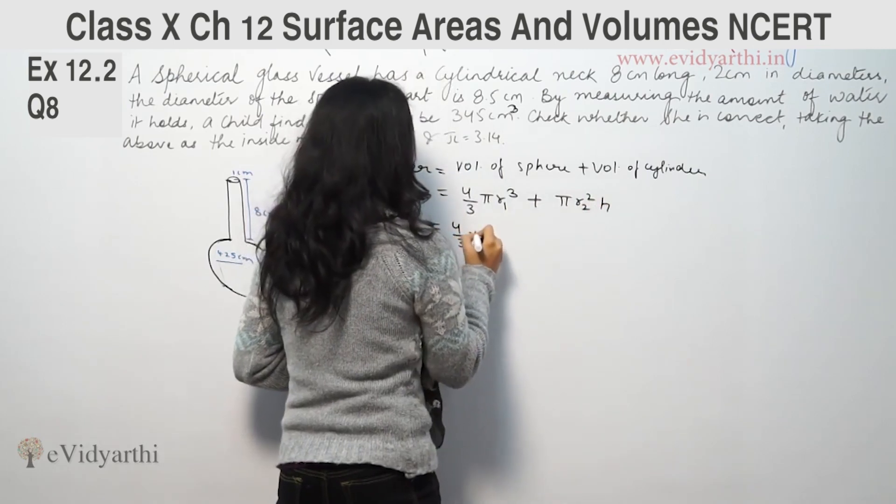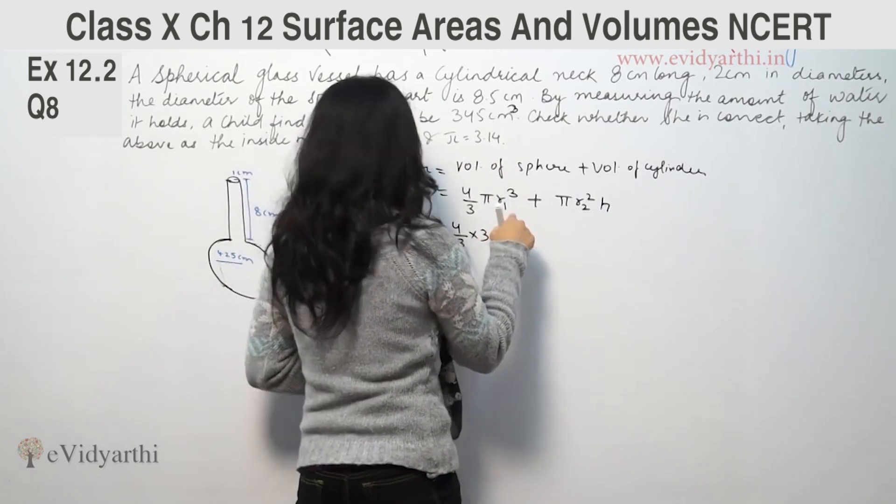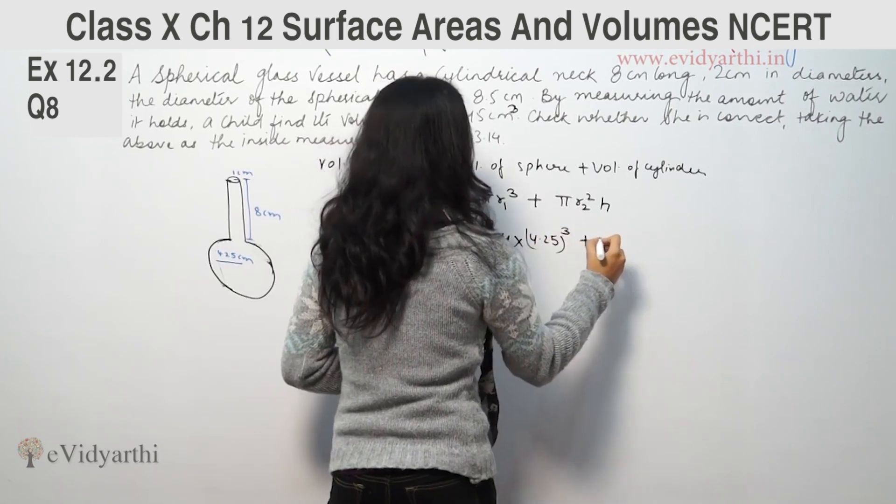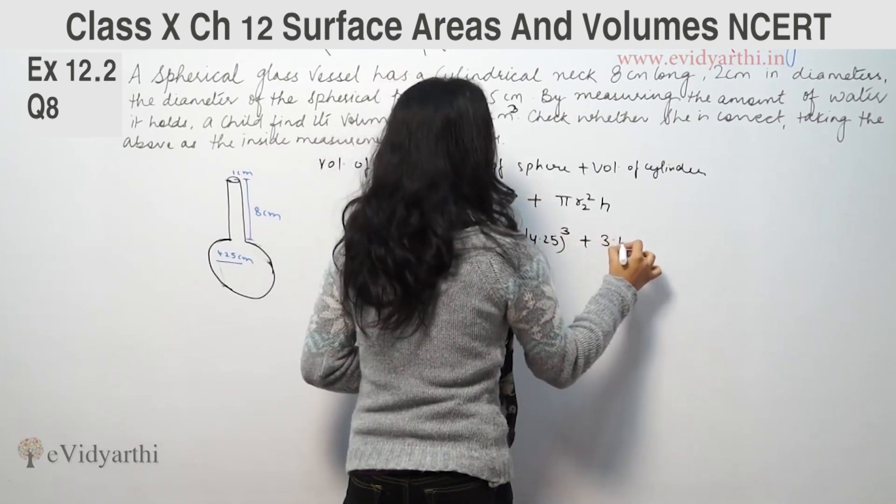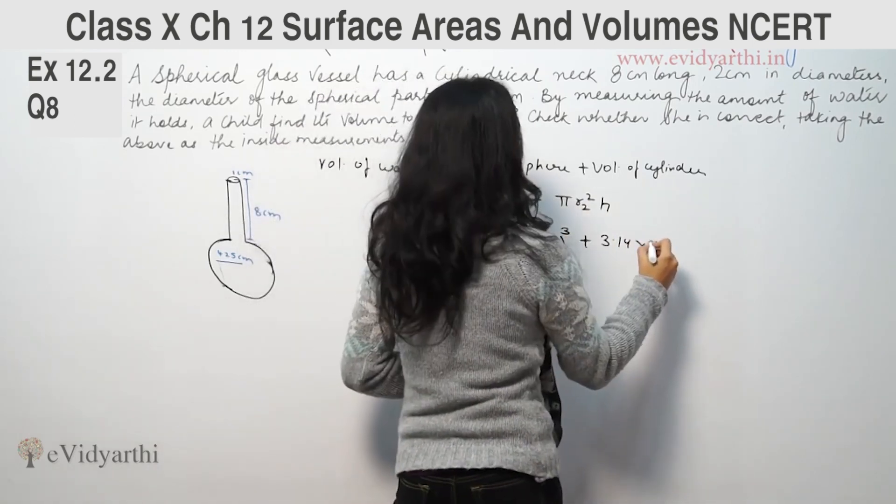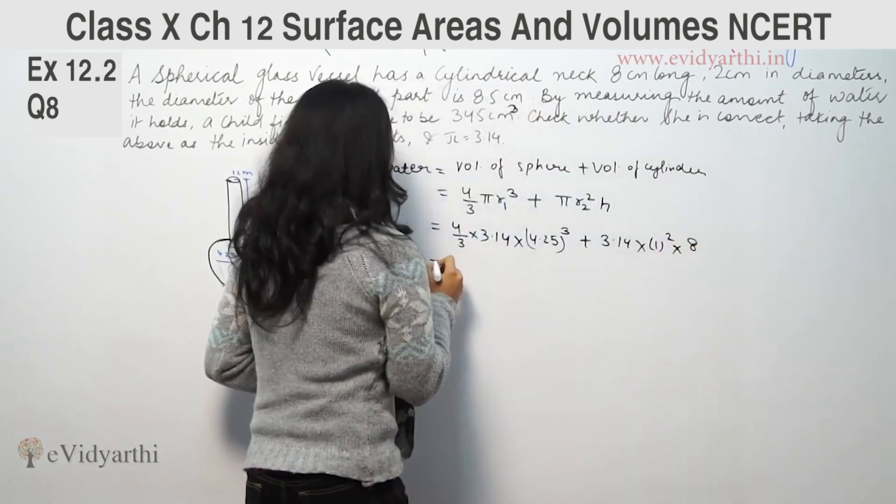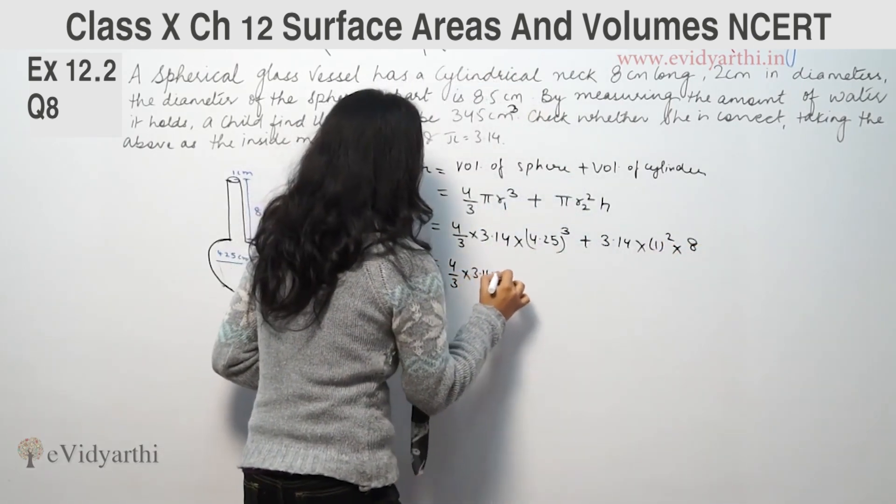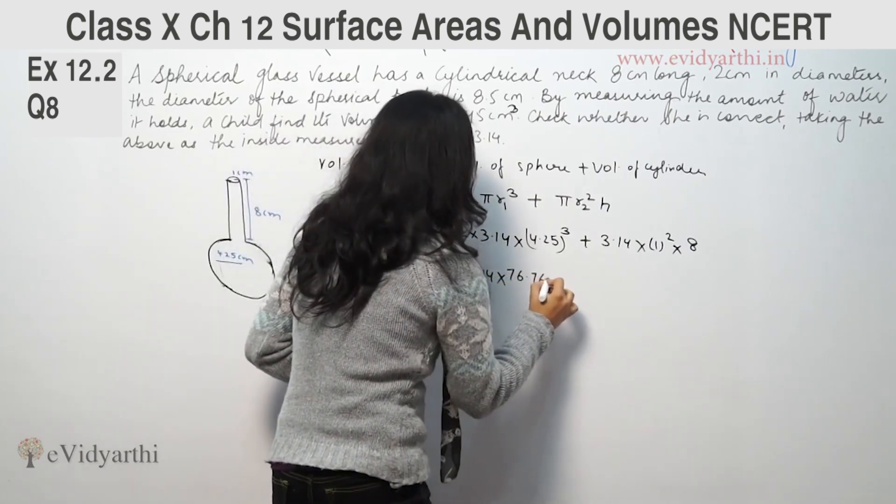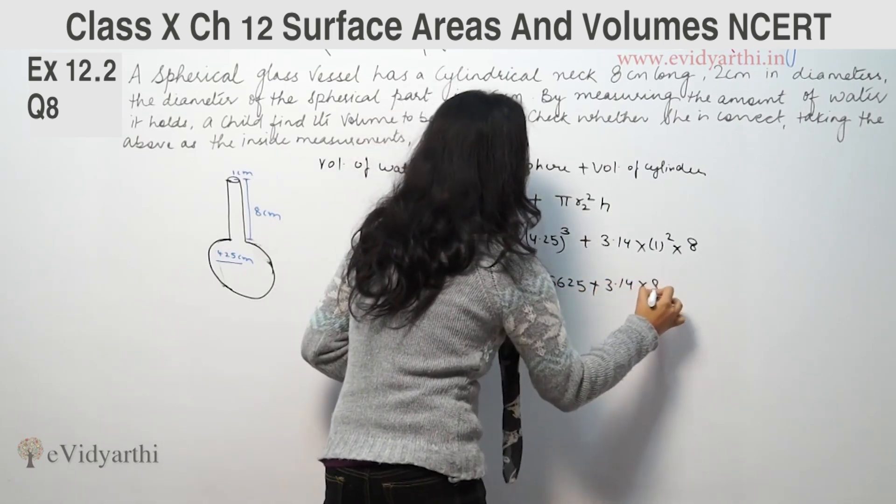So 4/3 into π which we use as 3.14, radius given is 4.25, so 4.25 cubed plus π which is 3.14, radius given is 1 that means 1 squared and height given is 8. So 4/3 into 3.14, 4.25 cubed is 76.765625, 3.14 into 8.